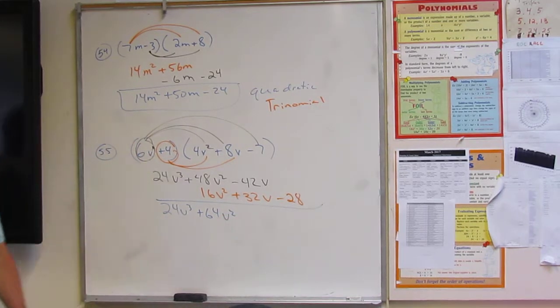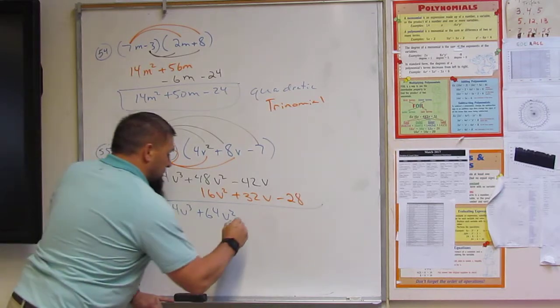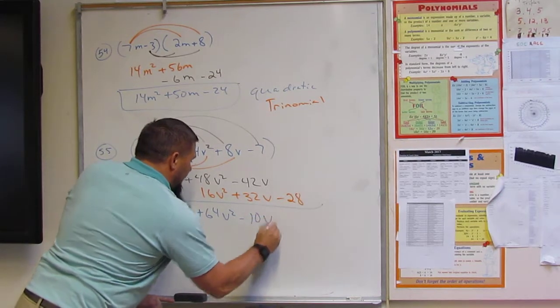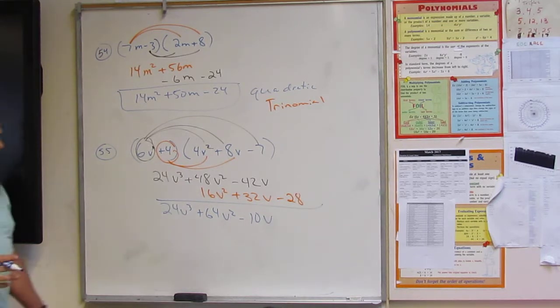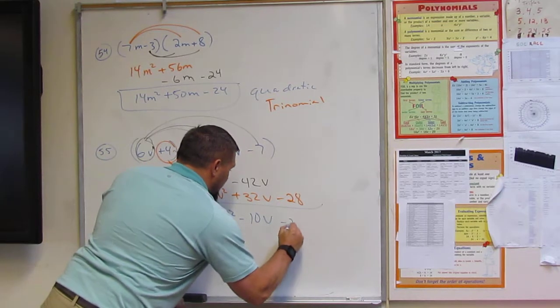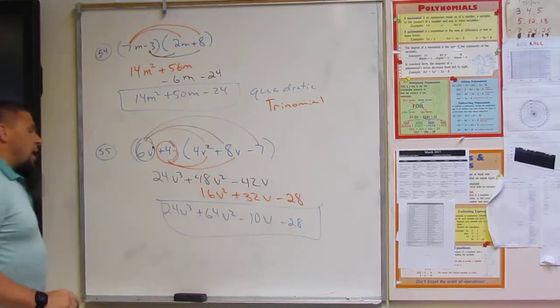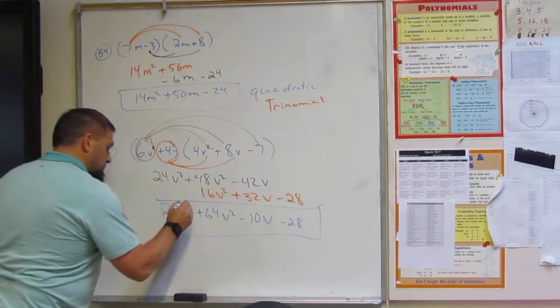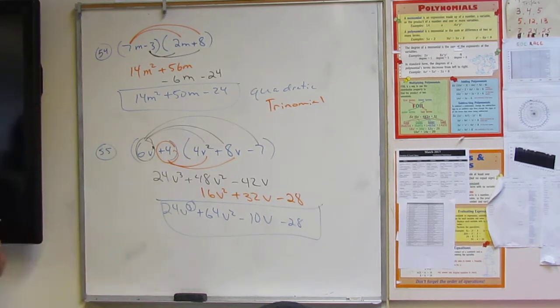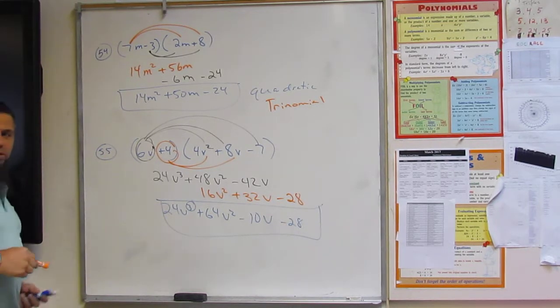And then what is negative 42 plus 32? Very good. Negative 10. You guys are on a roll. And then negative 28 plus nothing is, well, that's negative 28. And so what do we call this? What's the power?